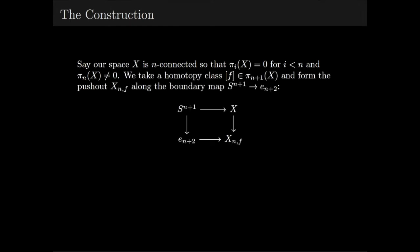Now, we take a homotopy class in π_{n+1}, the dimension above our first non-trivial homotopy group, since we want to kill off this class. In order to do this, we form the pushout, which I'll denote as X_n^f, along the boundary map taking the n+1 sphere to our n+2 cell.